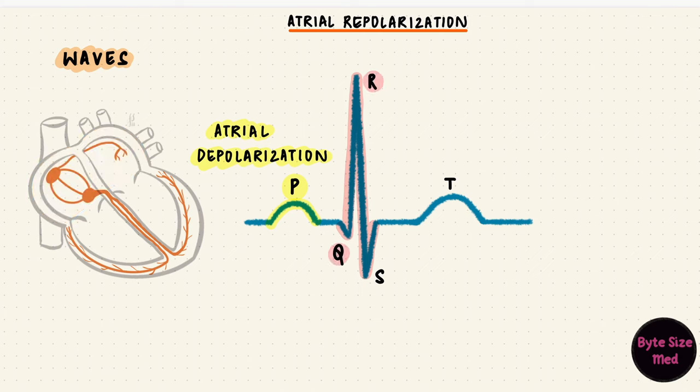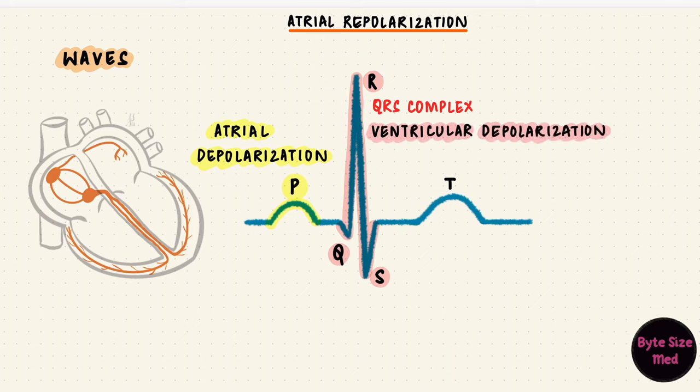Q, R, and S are put together as a complex, and that QRS complex represents ventricular depolarization. From the septum towards the apex, and then back up towards the base of the heart. So this QRS complex would happen just before the ventricles contract.